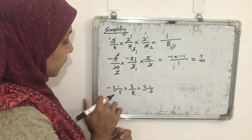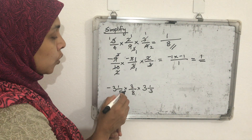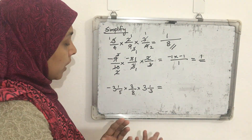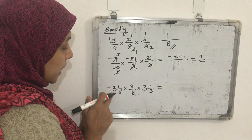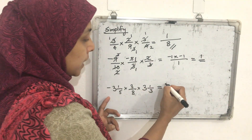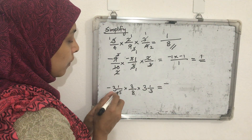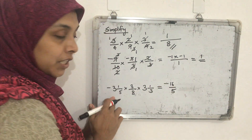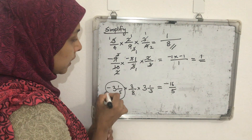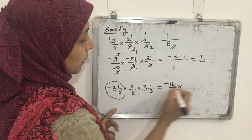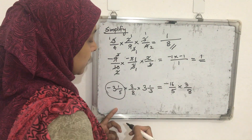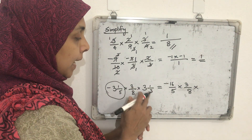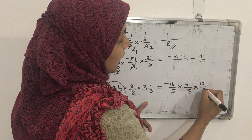Next question is in mixed number form: −3 1/5 into 3/8 into 3 1/3. First we convert to improper fractions. −3 1/5 becomes −(3 × 5 + 1)/5 = −16/5. Then 3/8 stays as 3/8. And 3 1/3 becomes (3 × 3 + 1)/3 = 10/3.